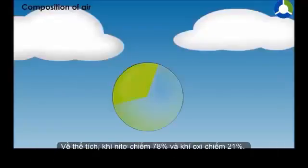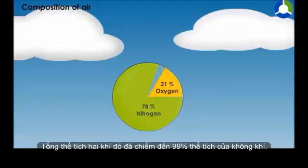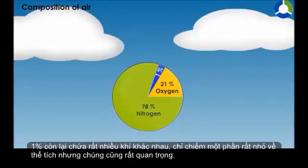By volume, nitrogen is 78% and oxygen about 21%. Together, these two gases make 99% of the volume of the atmosphere. The rest, 1%, are many other gases which are very less in volume, but they are also important for us.